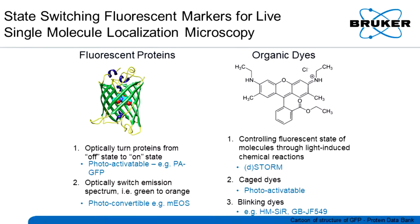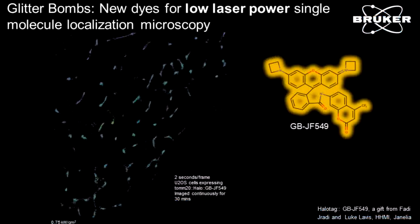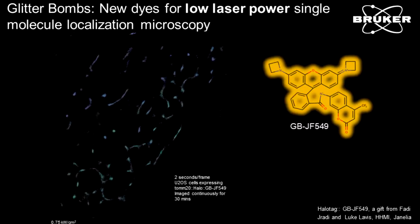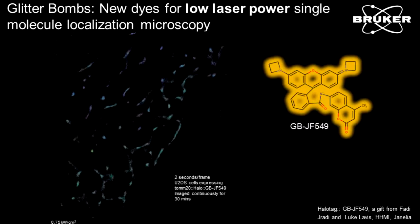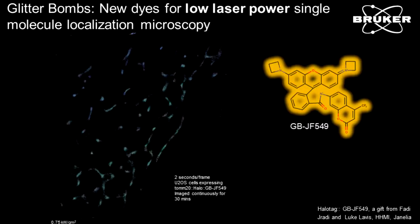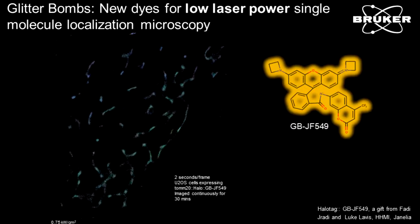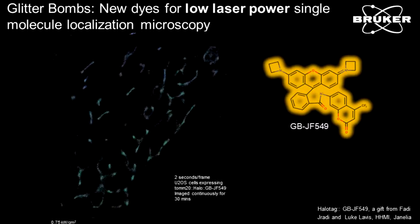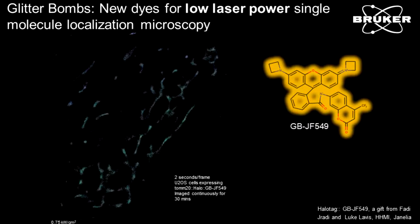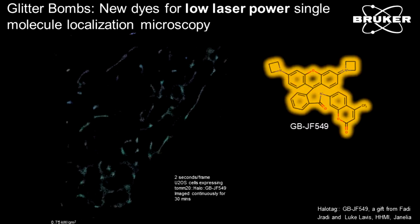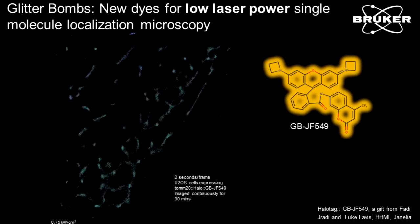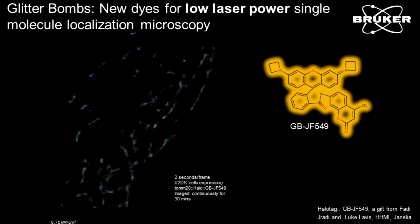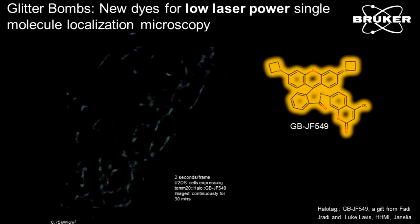I'll go through a collaboration we've been working on with Luke Lavis at Janelia for live cell imaging. The Glitterbomb dyes are based on Luke's Janelia Farm 549 dye, but with a Coumarin group added. This dye forms and breaks a bond: when the bond is formed the dye is non-fluorescent, and when it's broken it's fluorescent. The pKa of that is 5, so at neutral pH most of the dyes are off, meaning they spontaneously blink without needing high laser power. Here we have mitochondria labeled with HaloTag using the Glitterbomb dye, imaged continuously for 30 minutes at 2 seconds per frame. We can use very little laser power in continuous imaging and get happy mitochondria moving, so we can actually do live cell single molecule imaging quite well with these dyes.